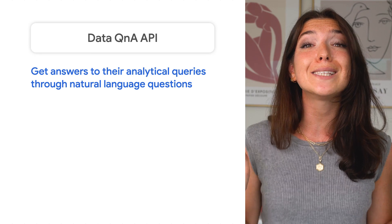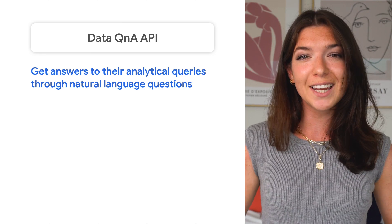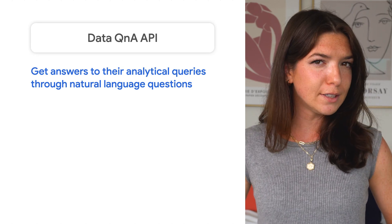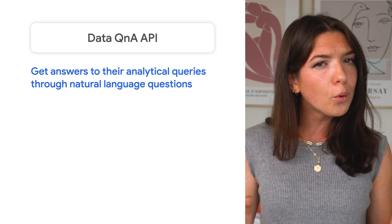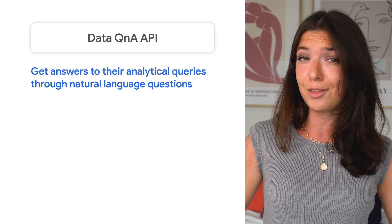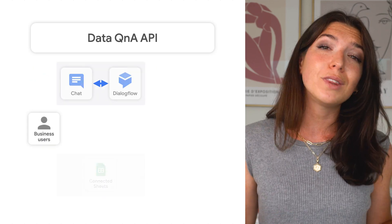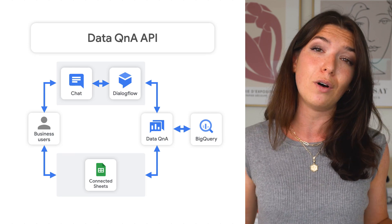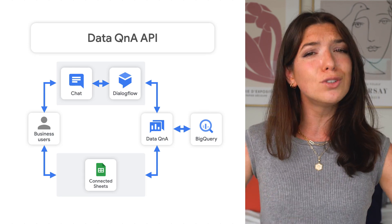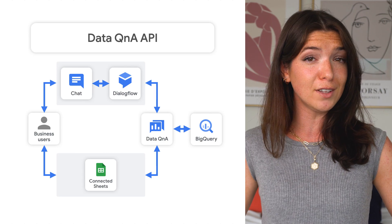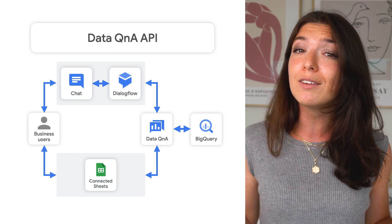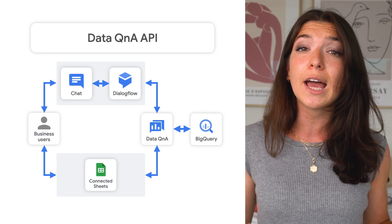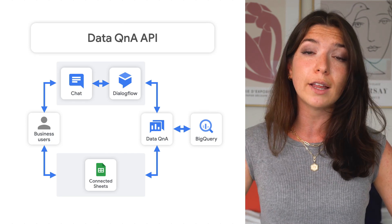The last API I'll mention is one of my favorites: Data Q&A, which is currently in preview. Are business users at your organization always pinging you to query data on their behalf? Well, with the Q&A API, you can convert natural language text inquiries into SQL, meaning you can build a super powerful chatbot that fulfills those query requests, or even give your business users access to connected sheets so they can ask analytics questions directly in a spreadsheet.